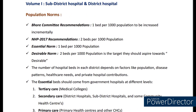Under population norms, the 1st Bhore Committee recommendation is 1 bed per 1000 population to be increased incrementally, and later the National Health Policy 2017 recommended 2 beds per 1000 population. Based on this, there are two terms: Essential Norm and Desirable Norm. Under Essential Norm, we need to have 1 bed per 1000 population, whereas under Desirable Norm, it is 2 beds per 1000 population.